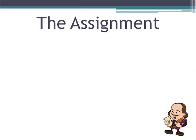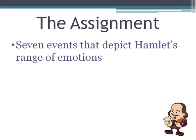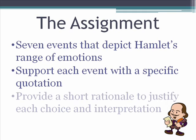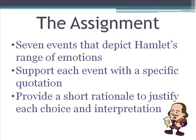Before working on the bar graph, students will have to do a little bit of work in advance. First, they have to choose seven events that depict Hamlet's range of emotions. They need to support each emotion with a specific quotation from the play — this can be something that Hamlet said or something that another character says about Hamlet. Finally, students will want to provide a short rationale to justify their choices and their interpretations. All of this work needs to be done before attempting the bar graph and can be saved in a Microsoft Word document or in another file of the student's choice.